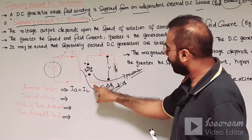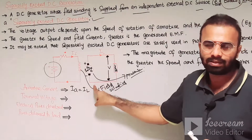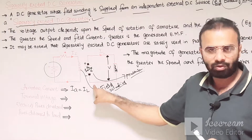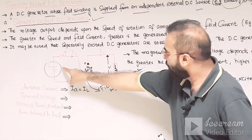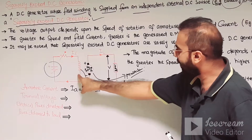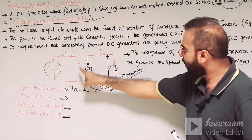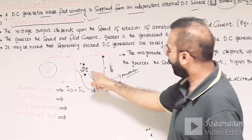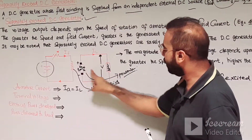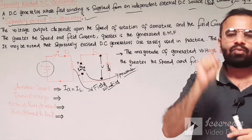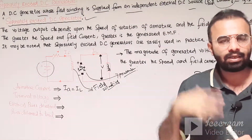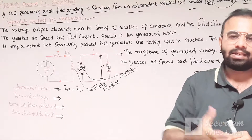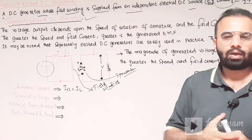The armature is driven through an external prime mover. Hence, according to Faraday's law of electromagnetic induction, whenever the flux linking with a coil changes, an EMF is induced in the coil.